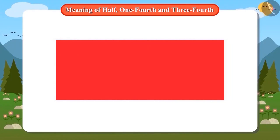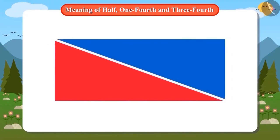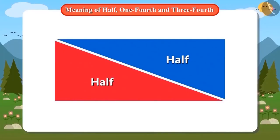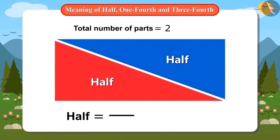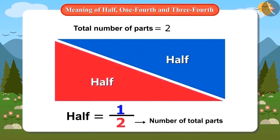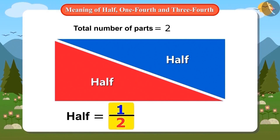Look, this is a rectangle. When it is divided into two equal parts, one part is called half of this entire shape. But how to write it as a number? First we will see how many parts of the whole object there are — there are a total of two parts. We will draw a line to show it and write two below it. Now tell me, how many of these two parts will be called half? One of these two parts will be called half. So we will put one above this line — it means one out of two parts. It is read as one half, that is one out of two parts.